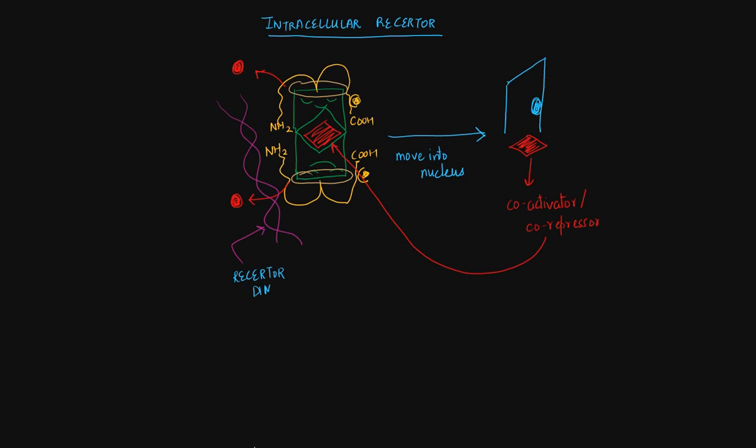This leads to transcription into mRNA, and this mRNA gets translated into proteins. All this is happening at the amino terminal of the receptor. These proteins further lead to the actions.